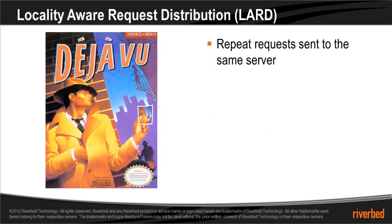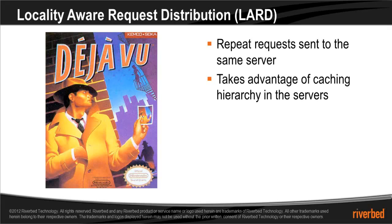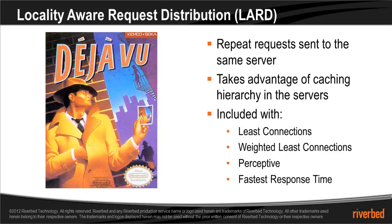Stingray will tend to send repeat requests for content to the same server that it sent it to before. This is done to take advantage of cache hierarchy principles in the servers. Any data, be it a web page or an image that has been recently accessed by a server, will likely still be in its cache or main memory and not have to be fetched from disk. Locality-aware request distribution is automatically included with least connections, weighted least connections, perceptive, and fastest response time algorithms.